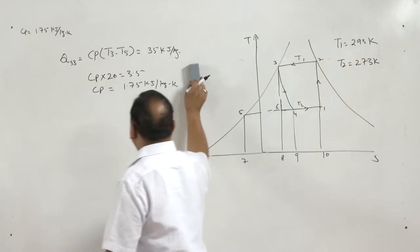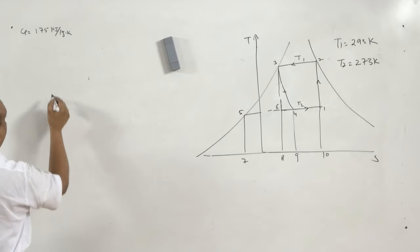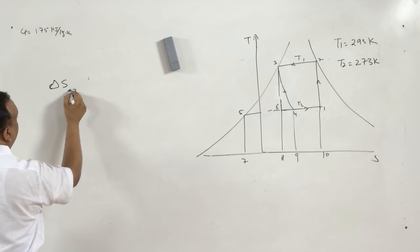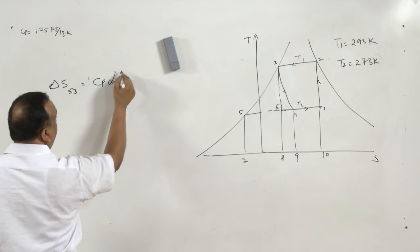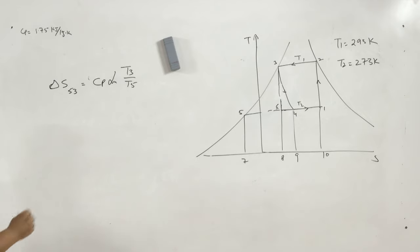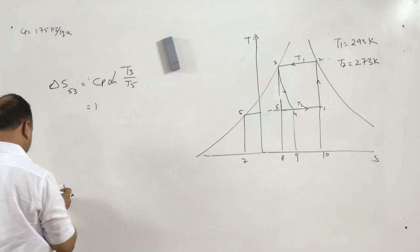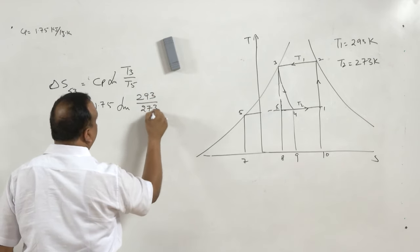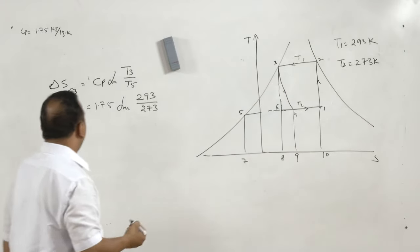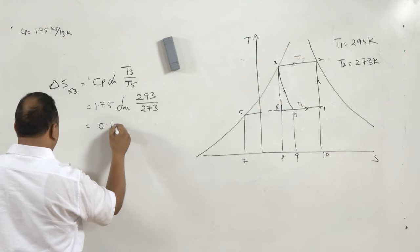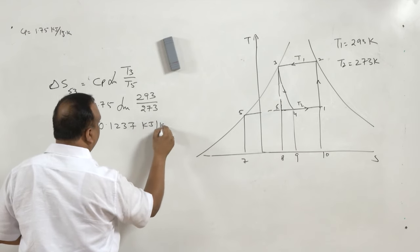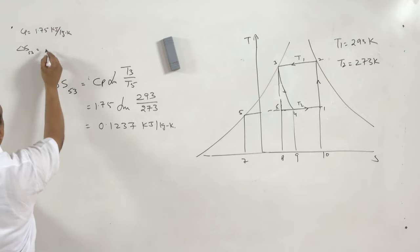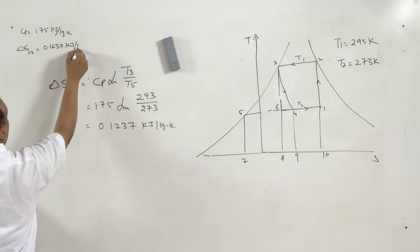Once we have the value of Cp, we can find the change in entropy during this process. The change in entropy ΔS from 5 to 3 is Cp × ln(T3/T5) = 1.75 × ln(293/273), because T3 equals T1 and T5 equals T2. This gives us a value of 0.1237 kJ/kg·K.